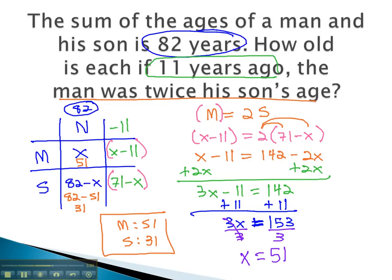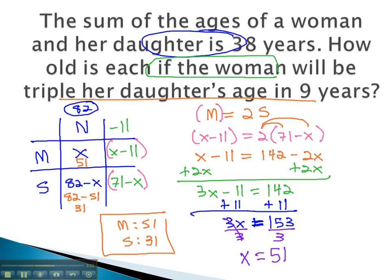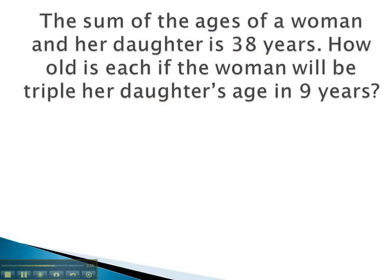Let's try another example where we can see this total time. In this problem, we see that we're comparing the ages of a woman and her daughter.